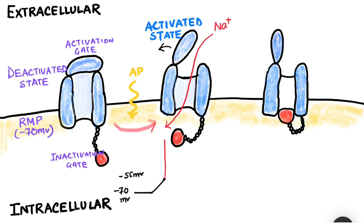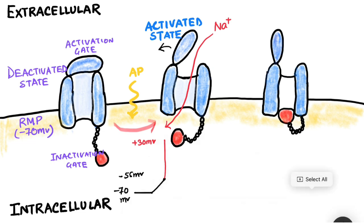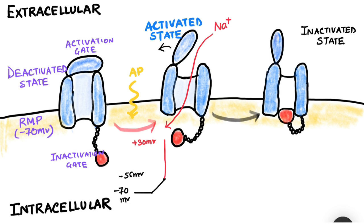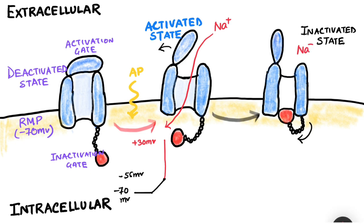When the membrane potential reaches around plus 30 millivolts, that depolarized state leads the sodium channel into a state known as the inactivated state, in which the activation gate remains open but the inactivation gate closes up. As this happens, sodium ions from the extracellular compartment can no longer move into the cell — that pathway is blocked.